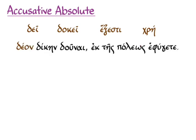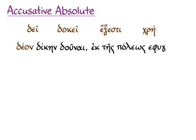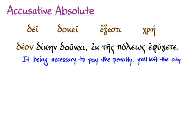For instance, here we have δέον — that accusative neuter singular participle — doing all of the work of making a circumstantial clause: 'it being necessary to pay the penalty.'